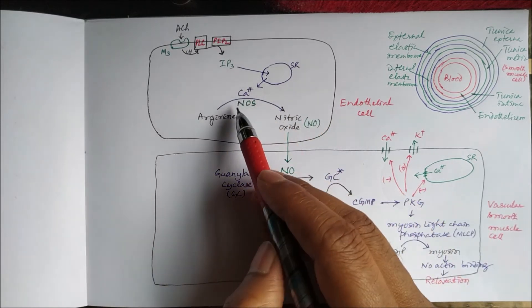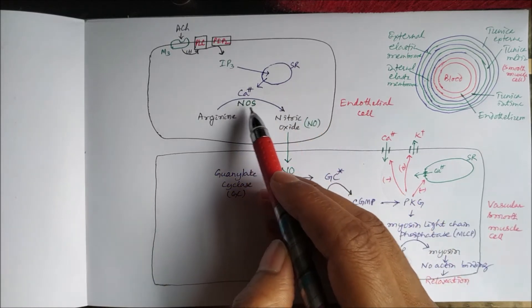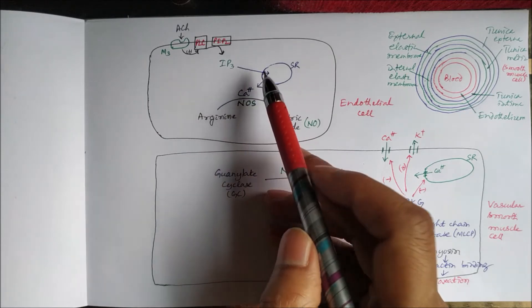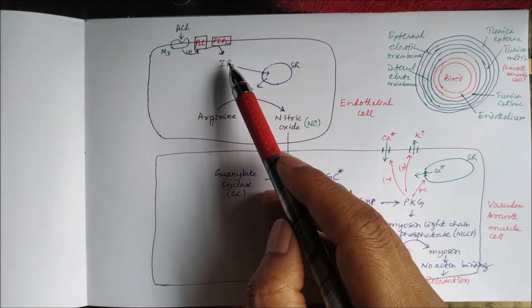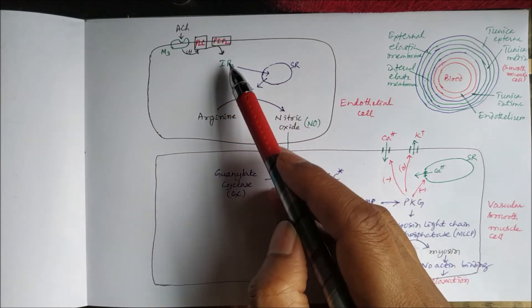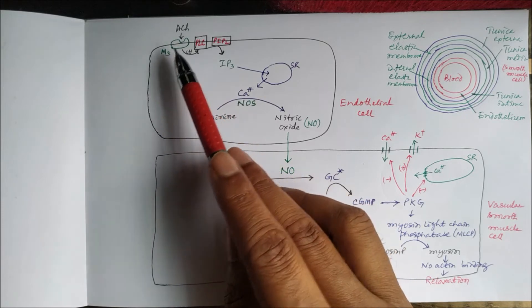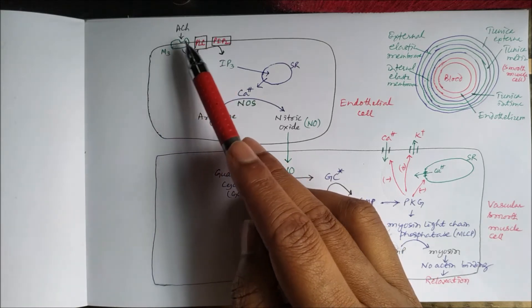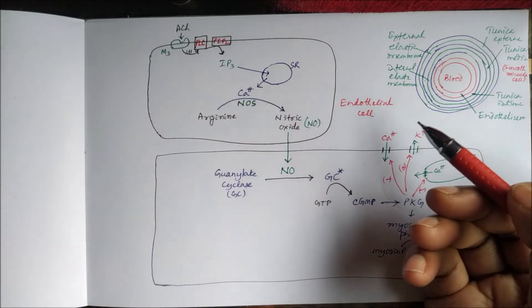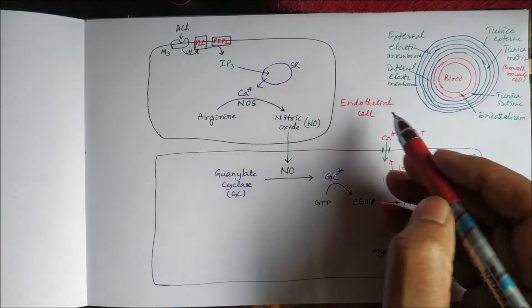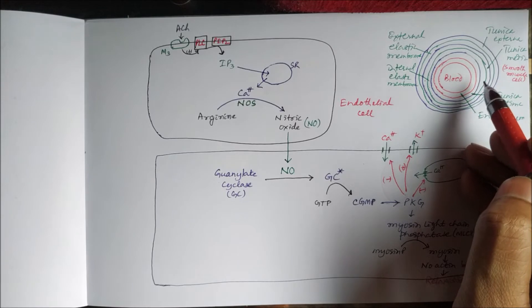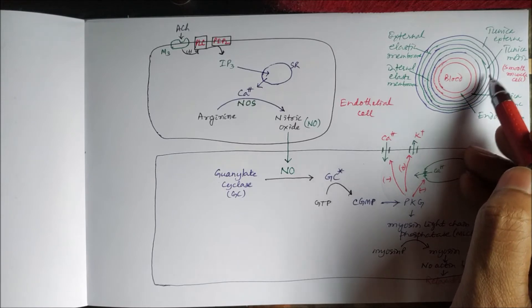Nitric oxide synthesis is carried out by the nitric oxide synthase enzyme in the presence of calcium. This calcium is supplied from the stores by the action of IP3, and IP3 is the second messenger for the M3 receptor for acetylcholine. This nitric oxide from the endothelial cell then travels to the smooth muscle cells in the tunica media.